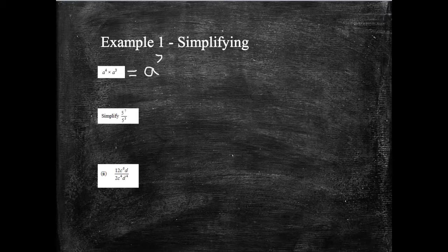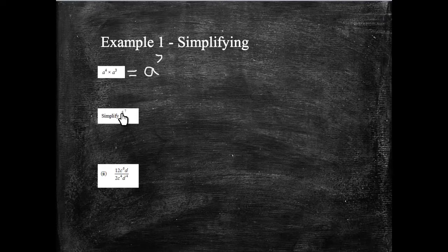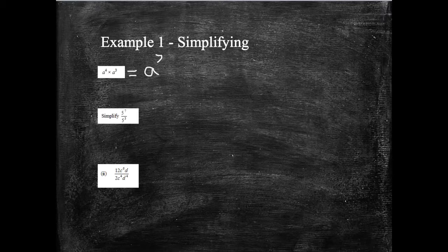Simplifying this, again, I'm thinking, are my base numbers the same? Yes, 5 to the 7 divided by 5 cubed. When I'm dividing, I take my powers away. So this is the same as 5 to the power 4. I've not been asked to do anything else other than simplify it. I don't have to give it as an exact value. It's simply 5 to the 4.